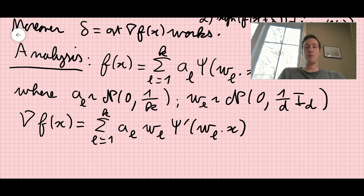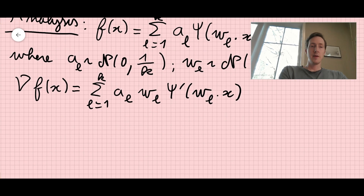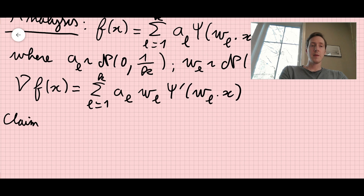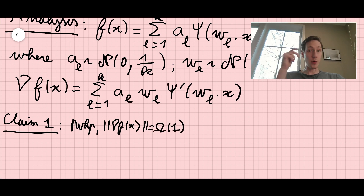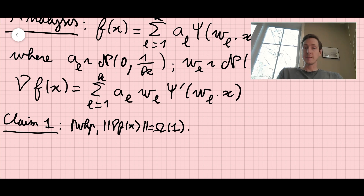We're going to make two claims. Claim 1 is that with high probability, the norm of the gradient of f at x is at least a constant — say 0.1. That's the first claim, and it's very easy to prove. Claim 2, more subtle and interesting, is that with high probability, we can control the supremum over perturbations delta.